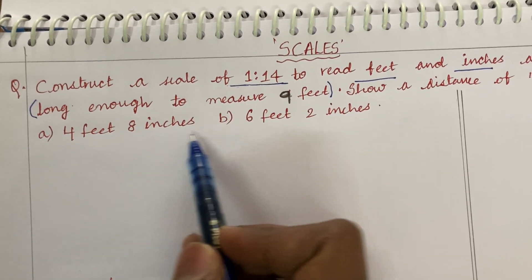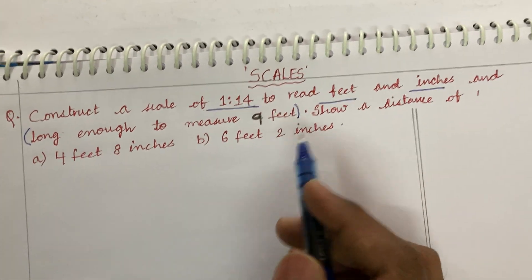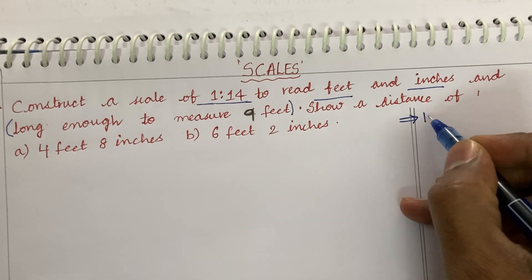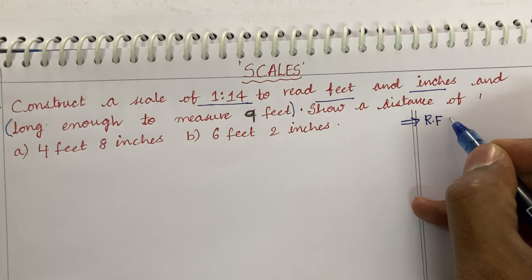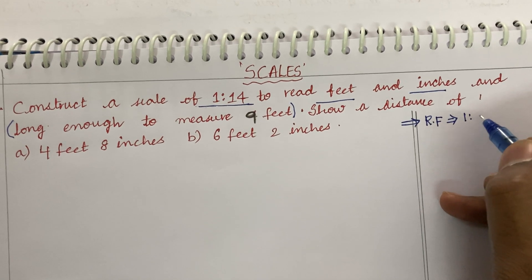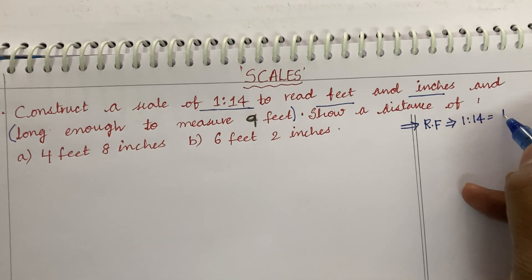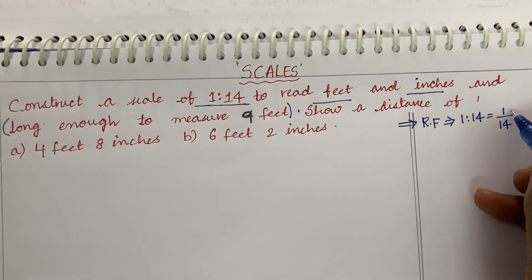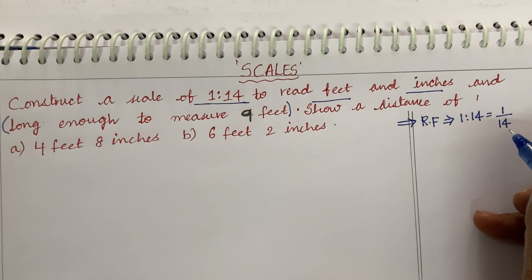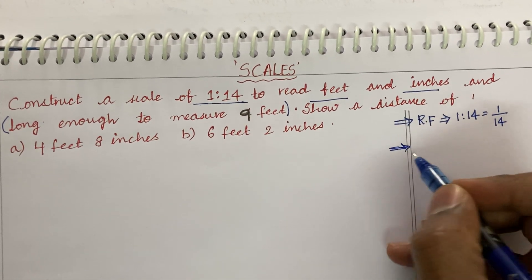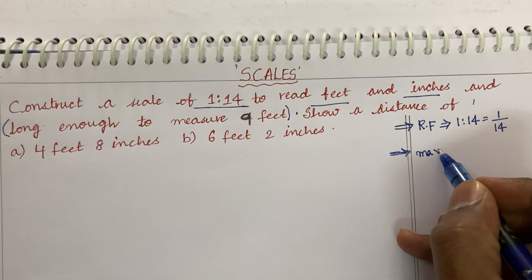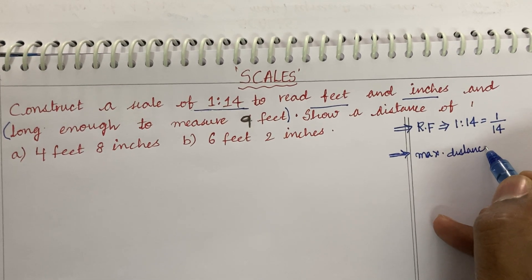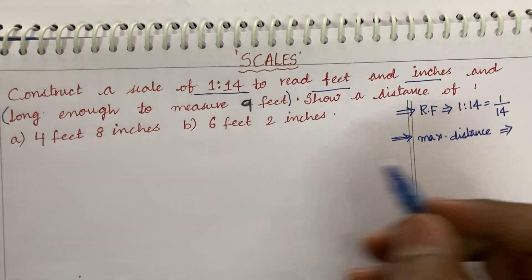Show a distance of 4 feet 8 inches and 6 feet 2 inches. When you look at this problem, first you are supposed to work out the RF. RF is directly given — the scale factor or representation factor — it is given as 1 to 14, which we can write as 1 upon 14. The length on the drawing as well as the actual length of the object is directly given. The maximum distance is also given — the scale is long enough to measure up to 9 feet.